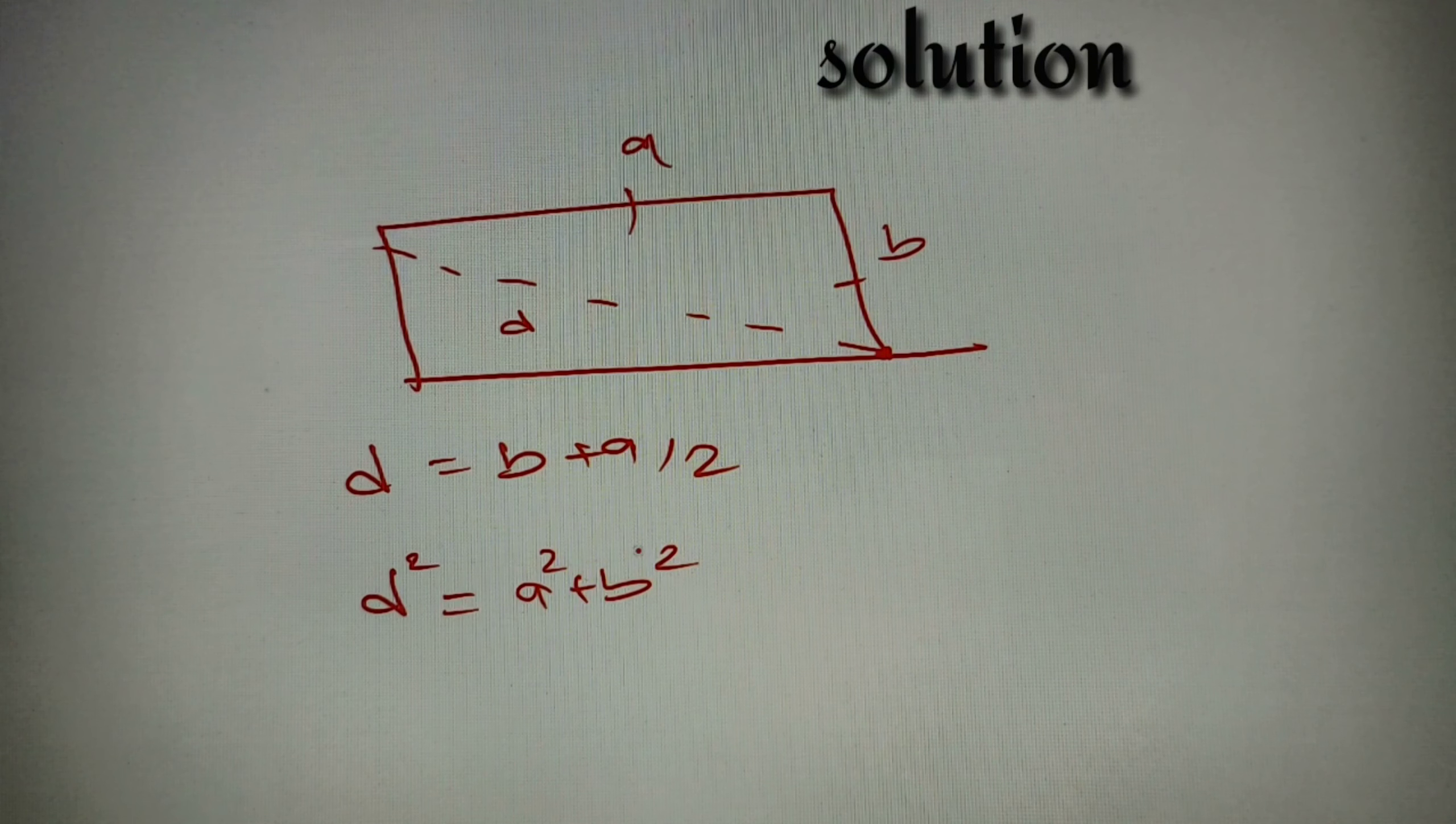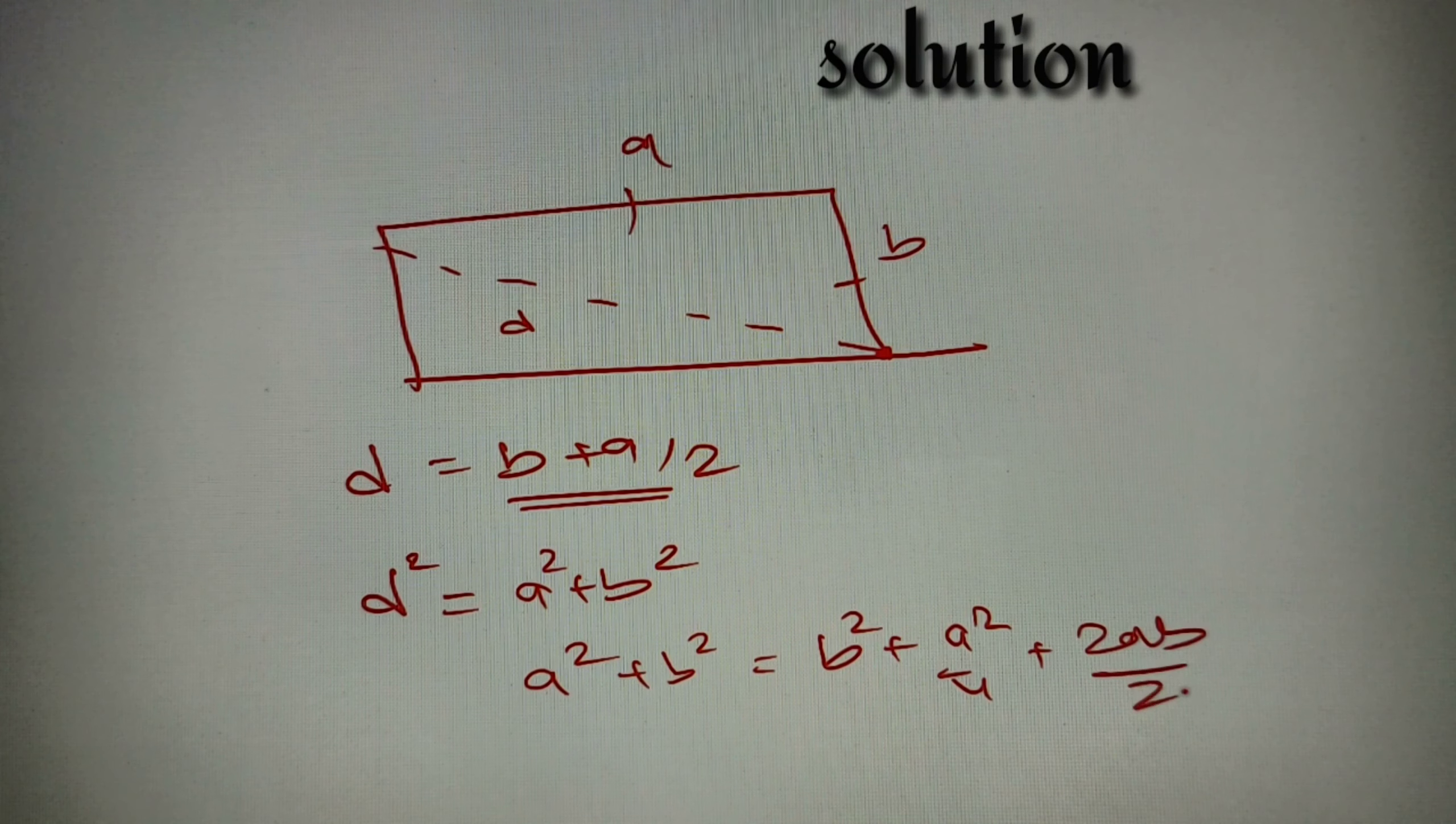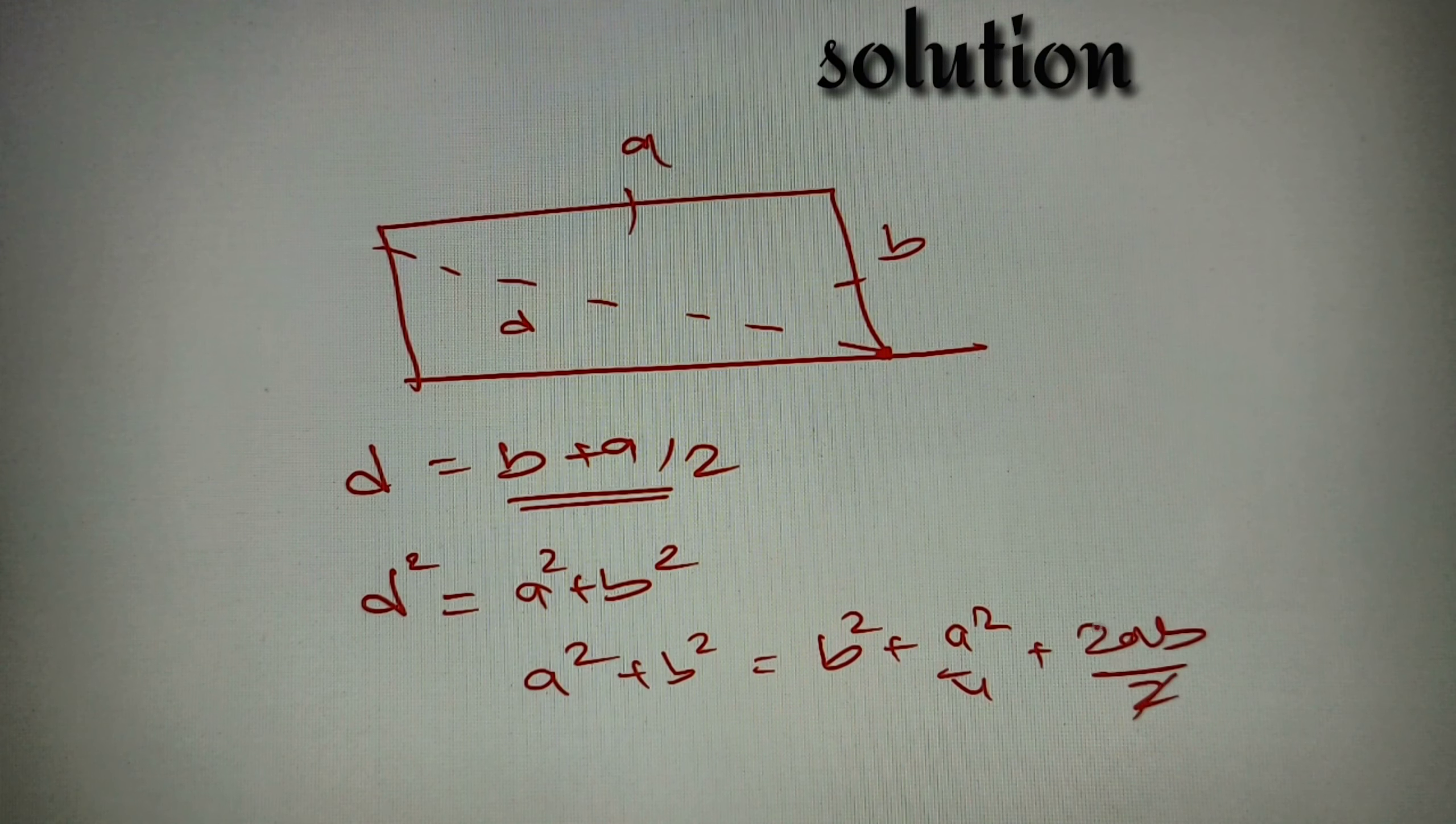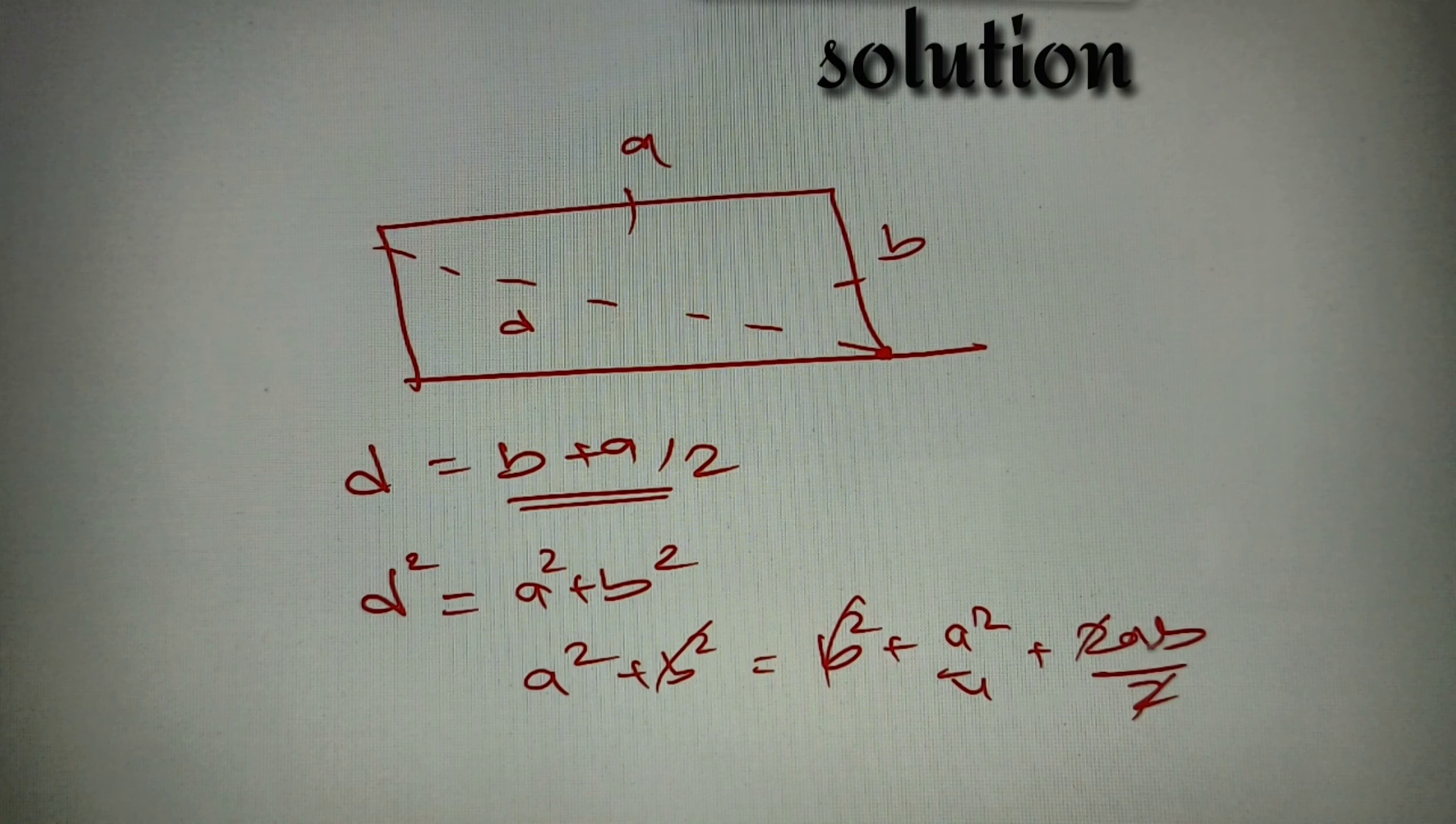Instead of A square plus B square, I can replace this with B plus A by two whole square. So I can write it as A square plus B square equals B square plus A square by 4 plus 2AB by 2. The two and two will get cancelled. This B square and this B square will also get cancelled and we'll get A square equals A square by 4 plus AB.